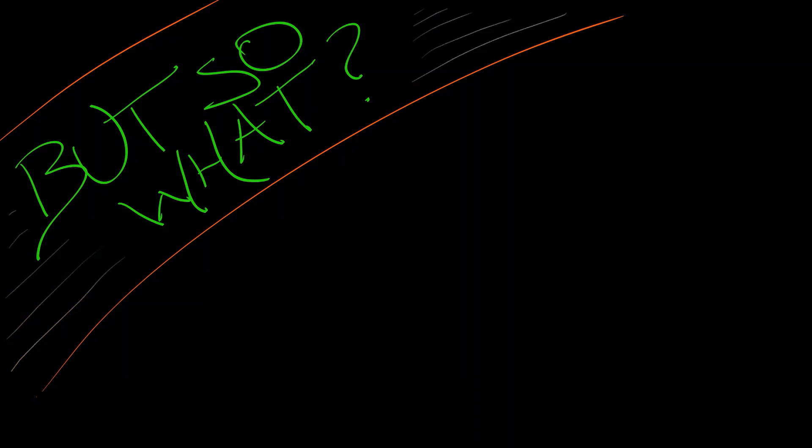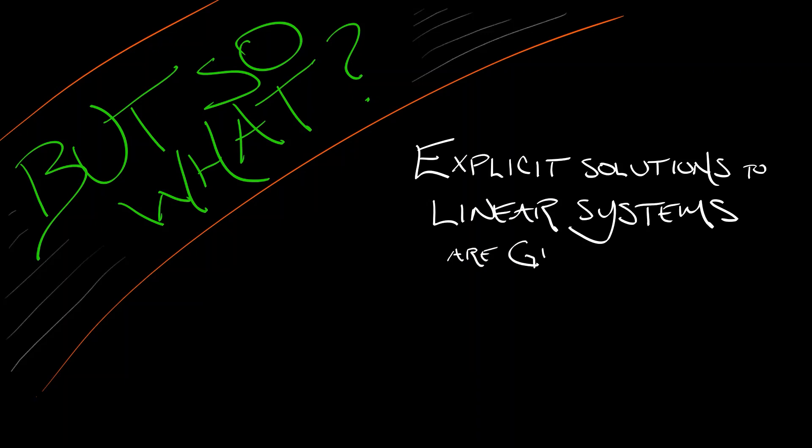What we are going to talk about is: so what? I mean, why are we going to all this trouble? Well, explicit solutions to linear systems are great. They're going to help us with non-linear systems, and sometimes linear systems are going to be really useful to us. But in order to really be useful, we need a qualitative understanding of what is happening with linear systems.